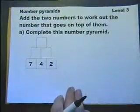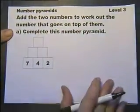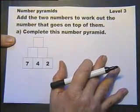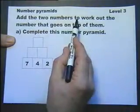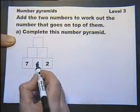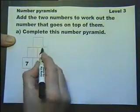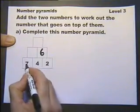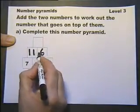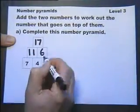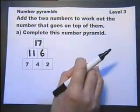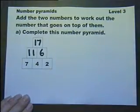As I say, these questions are in no particular order, but they're all exam questions from Key Stage 3 level 3. So now we're back to number. Add the two numbers to work out the number that goes on top — complete this number pyramid. If we add these two numbers together, we get the number that goes on top. How you do this adding, there's no worry about speed — even if it means counting on your fingers, that doesn't matter.